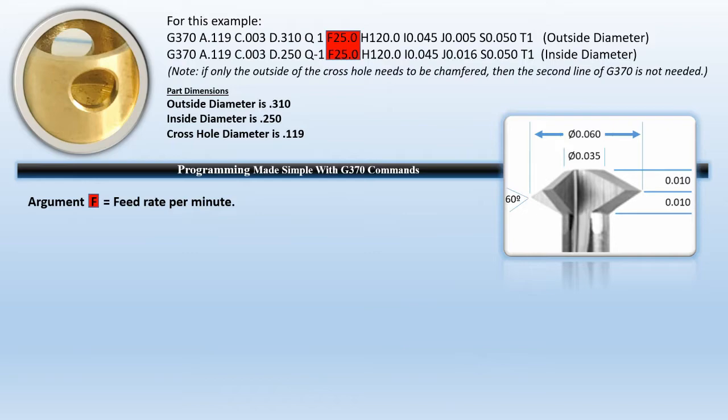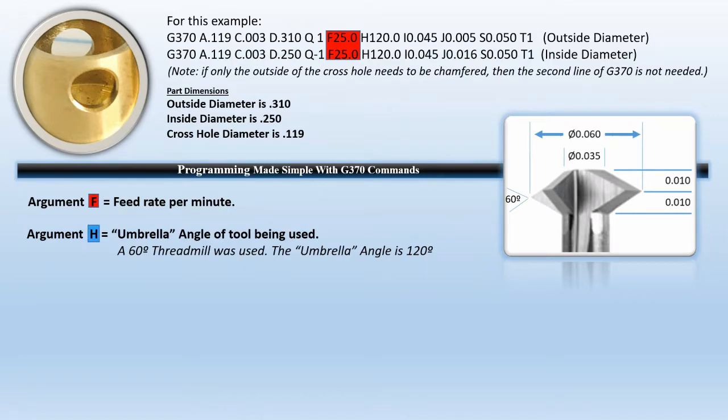F designates the tool that you're going to be using and the appropriate feed rate for this tool based on its RPM. In this case we used 25 inches per minute. H is the umbrella angle of the tool. A 60-degree thread mill was used, so the umbrella angle is 120 degrees. If you can imagine yourself under that angle, it would be a 120-degree included angle—the angle at the tip looking the other way.